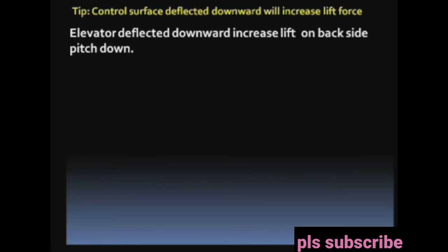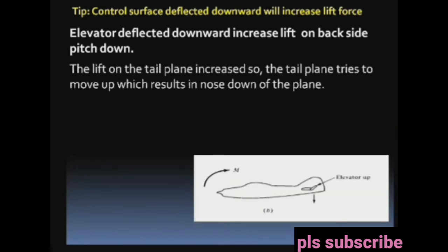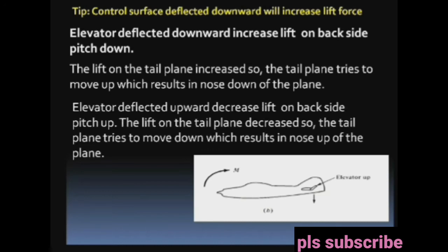When the elevator is deflected downward, it increases lift, which causes the aircraft to pitch down. The lift on the tail plane increases, so the tail plane tries to move up, which causes the nose of the plane to move down.